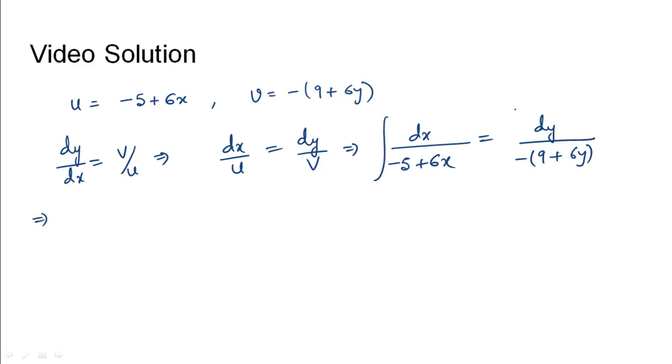Integrating both sides, we would get ln of minus 5 plus 6x, and since 6x is multiplied with a coefficient, 1 by 6 will come on the front of minus 5 plus 6x. This equals 1 by 6, and the minus can be taken outside as a constant, ln of 9 plus 6y, plus let us assume some constant ln of c for simplicity sake so that it can be sorted.